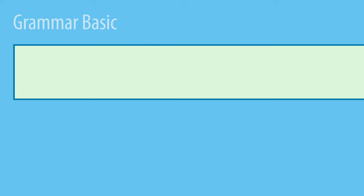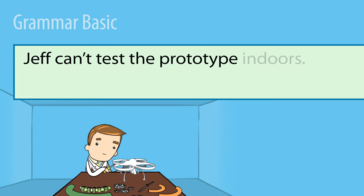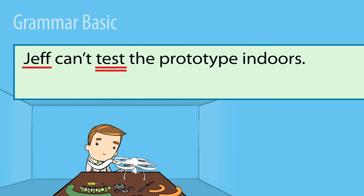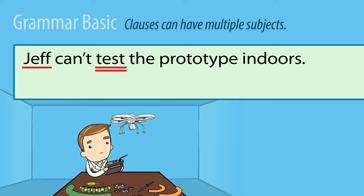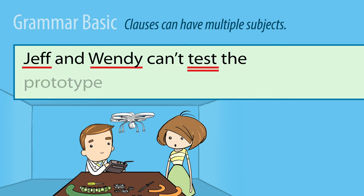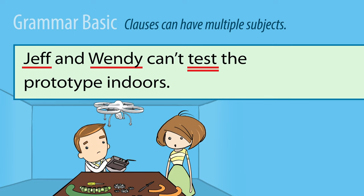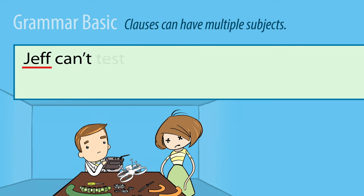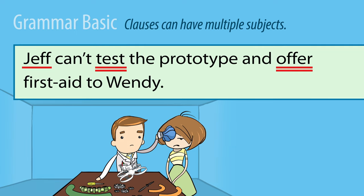Here's a group of words: Jeff can't test the prototype indoors. We have a subject and a verb, so this is a clause. Clauses can have multiple subjects — Jeff and Wendy can't test the prototype indoors — and multiple verbs: Jeff can't test the prototype and offer first aid to Wendy.